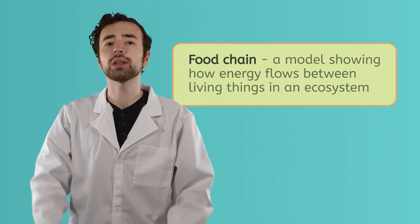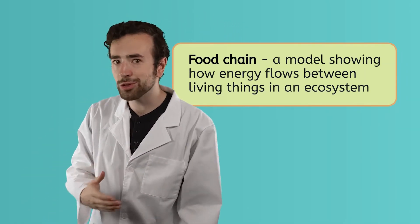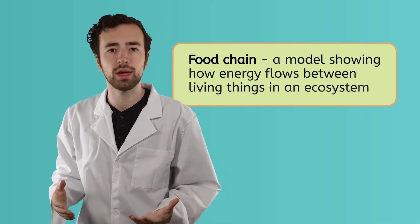Whether surviving a night in the wilderness or just day-to-day life, all living things need energy to survive. How that energy moves through an ecosystem can be represented with a food chain. A food chain is a model that shows how energy flows between living things.